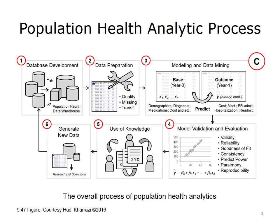This diagram shows the overall steps involved in developing analytics for population health management and risk stratification. As shown in Box 1, the first stage involves the merging of various datasets and developing a centralized or distributed population health data warehouse. The second step, depicted by Box 2, includes various processes to prepare the data for analysis, such as fixing data quality issues, deleting or imputing missing data, and transforming the data to meet the assumptions of a given analytical approach. The next step contains the development of modeling and data mining approaches, requiring a base dataset and an outcome dataset that collectively include the dependent and independent variables.